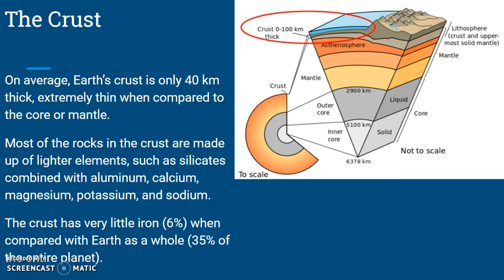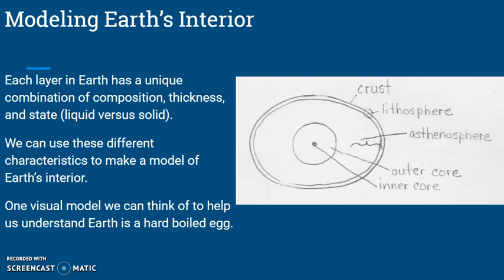On average, earth's crust is only 40 kilometers thick, which is extremely thin compared to the mantle and core. Most of the rocks in the crust are made up of lighter elements such as silicates combined with aluminum, calcium, magnesium, potassium, and sodium. The crust has very little iron — only about 6% — compared to the rest of the earth which has 35% iron, especially in the core. Each layer in earth has a unique combination of composition, thickness, and state — liquid versus solid — and we can model these different characteristics with an egg.